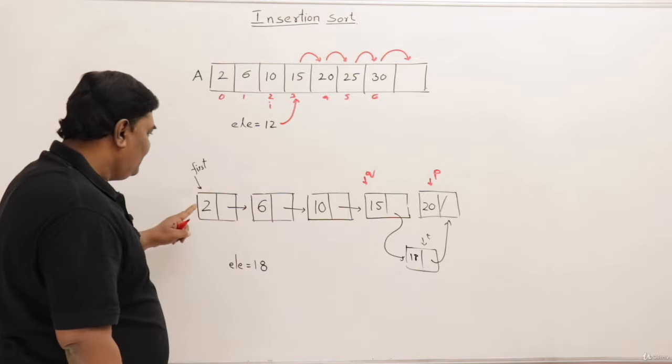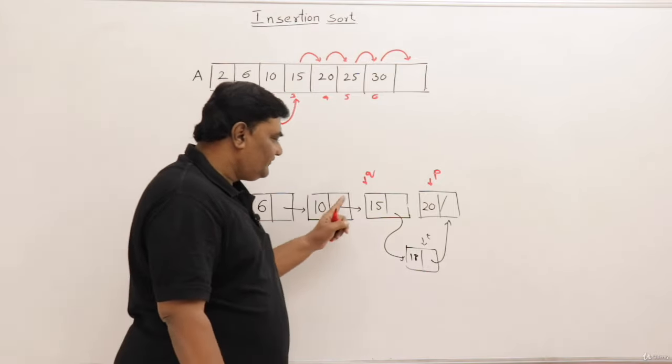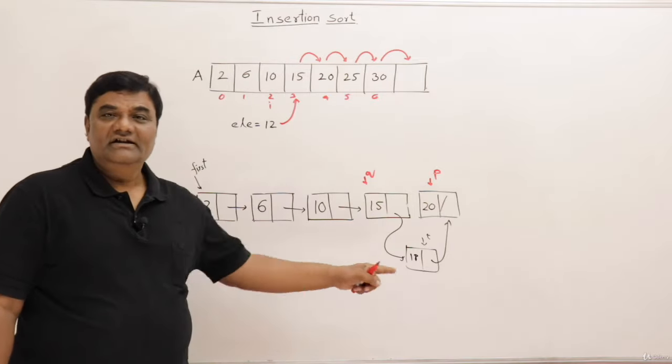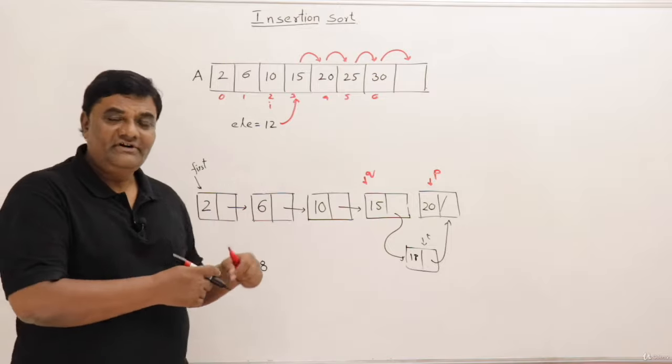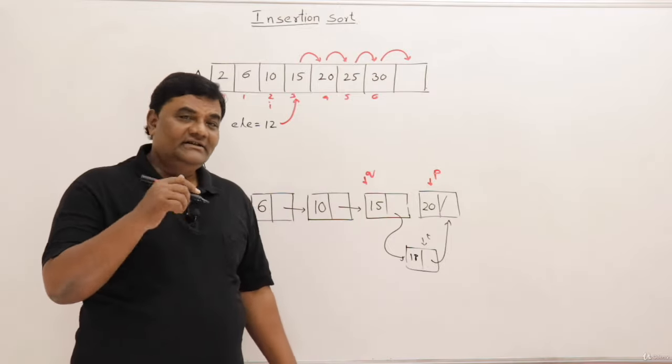Now if I start from here, 2 to 6, 6 to 10, 10 to 15, 15 to 18, 18 to 20. So 18 is inserted in a sorted position. So in a linked list we have to find out its position and then insert.